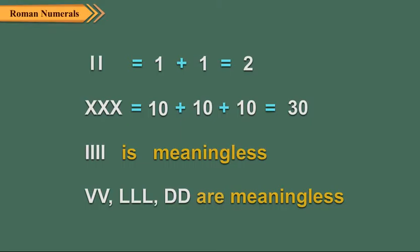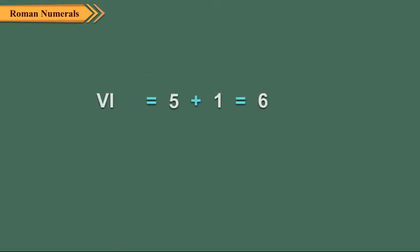When a symbol is followed by a smaller symbol, you add up their values. For example, in VI, V of 5 is followed by I of 1. So, its value is 5 plus 1 which is equal to 6.